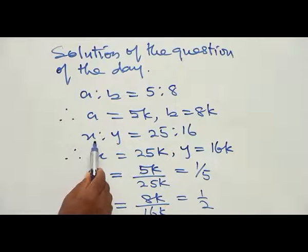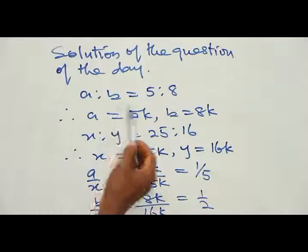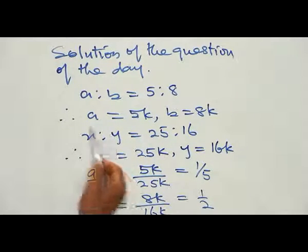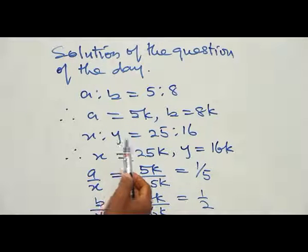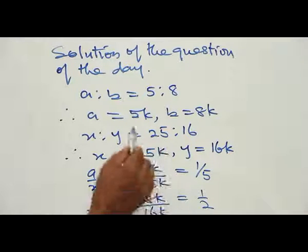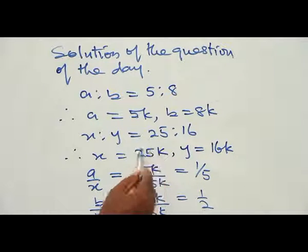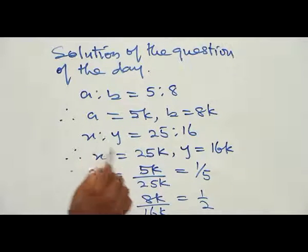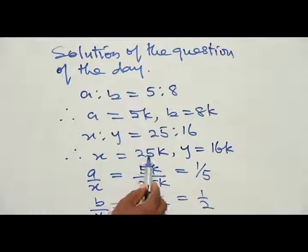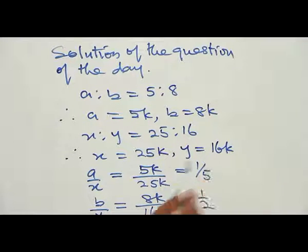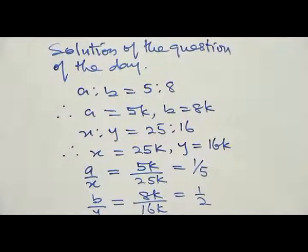Similarly, for x ratio y, we multiply by the same constant K. Something that multiplied to reduce it to this point, or divided each of these terms to reduce it to this point. So when we multiply it back with that term, we get our x is equal to 25K and our y is equal to 16K. These are the original variables of a, b, x and y.